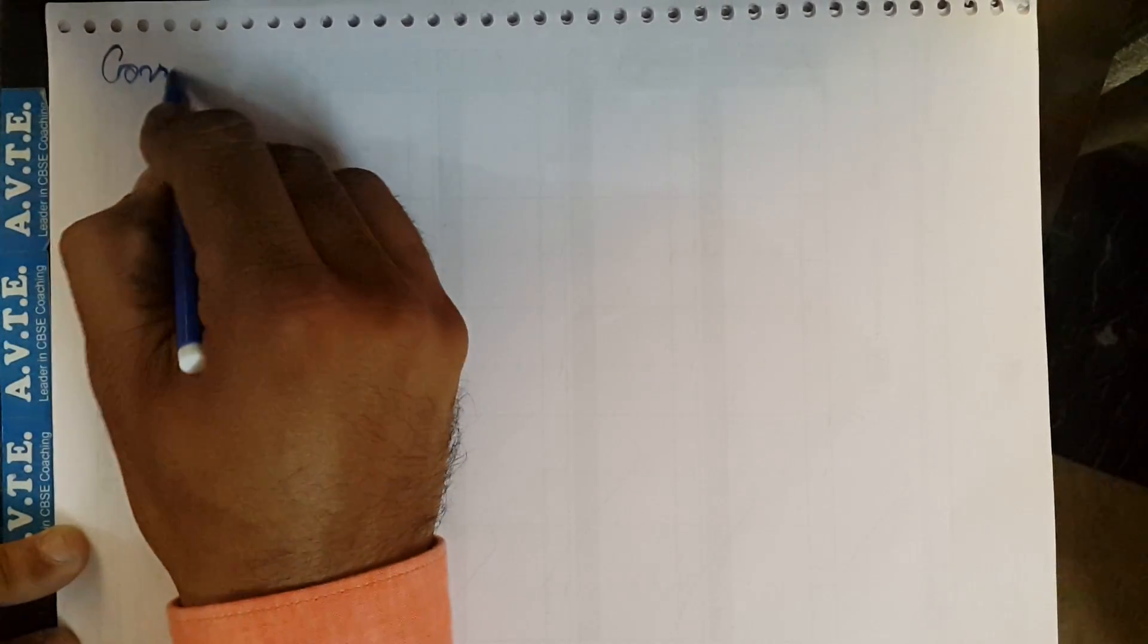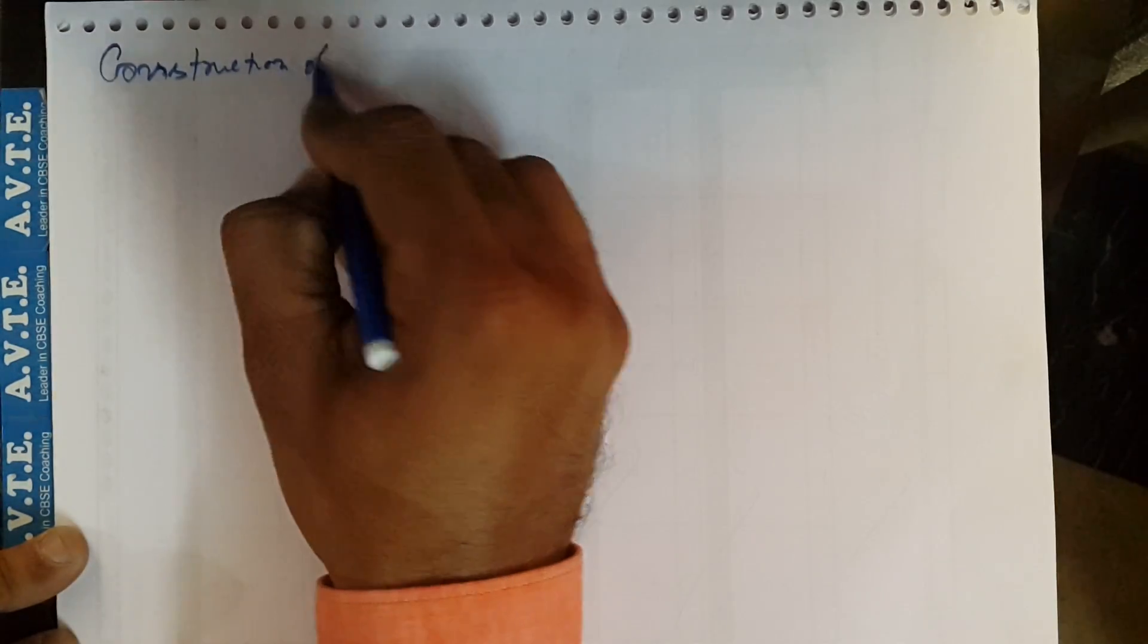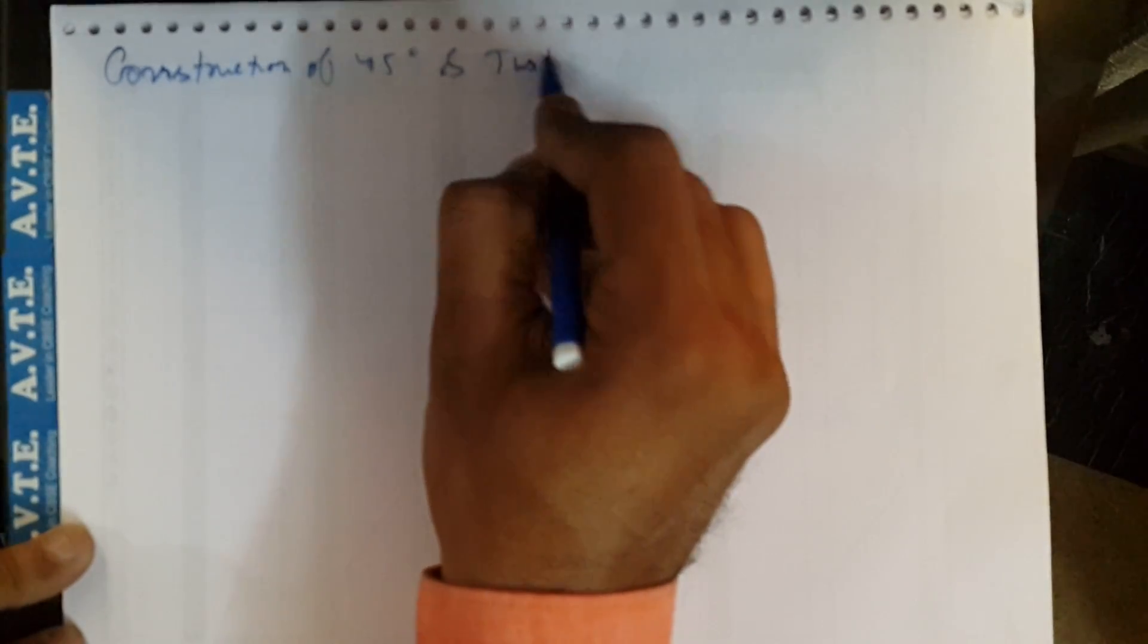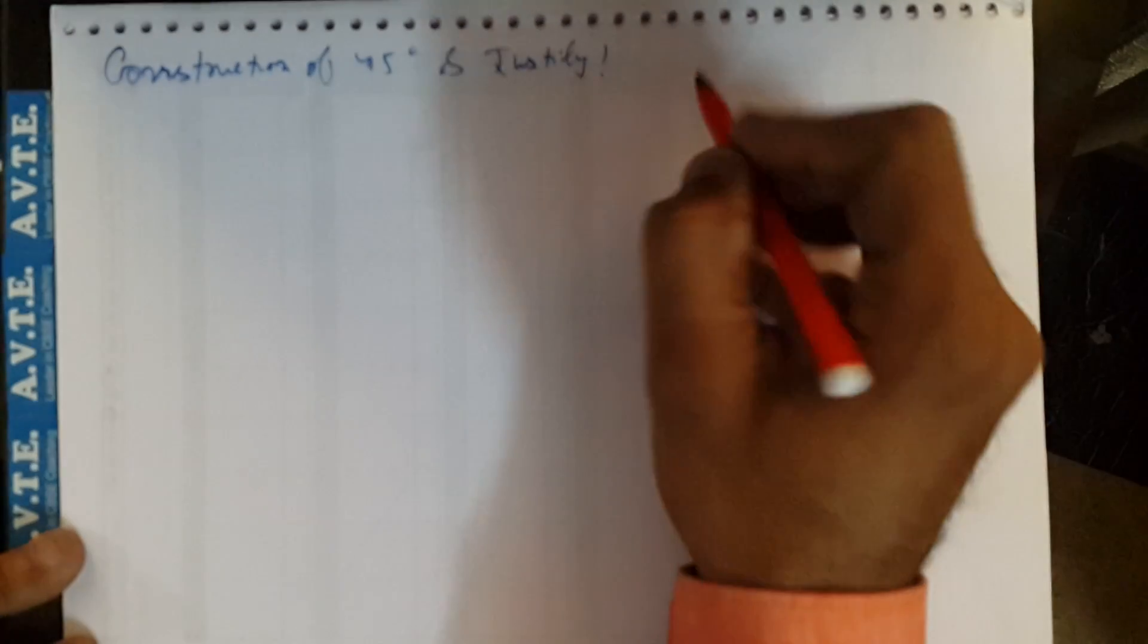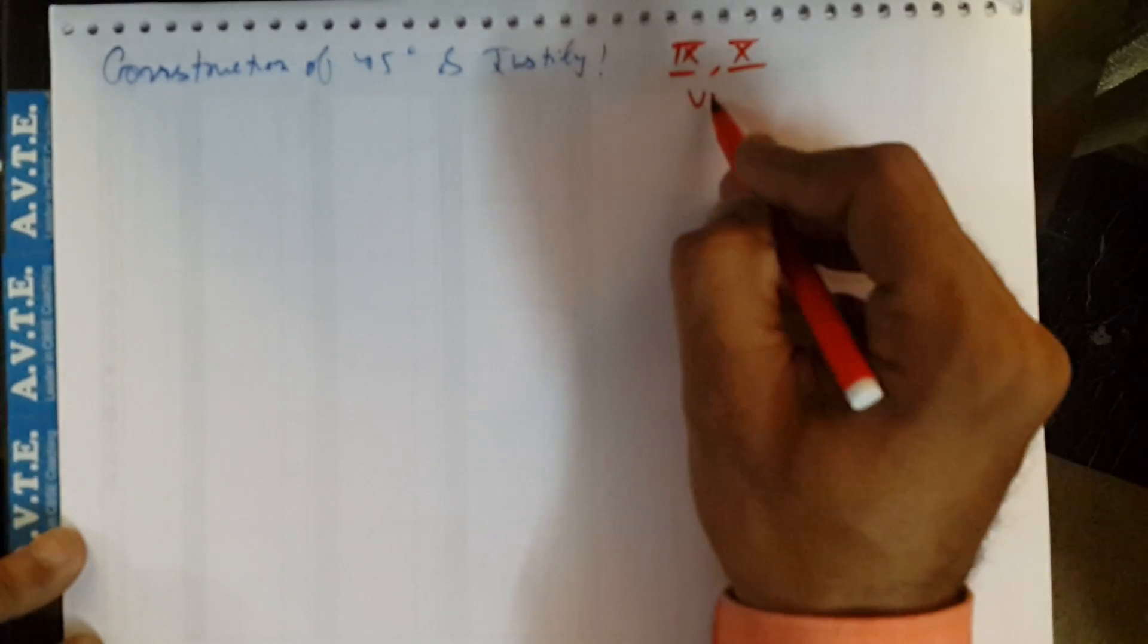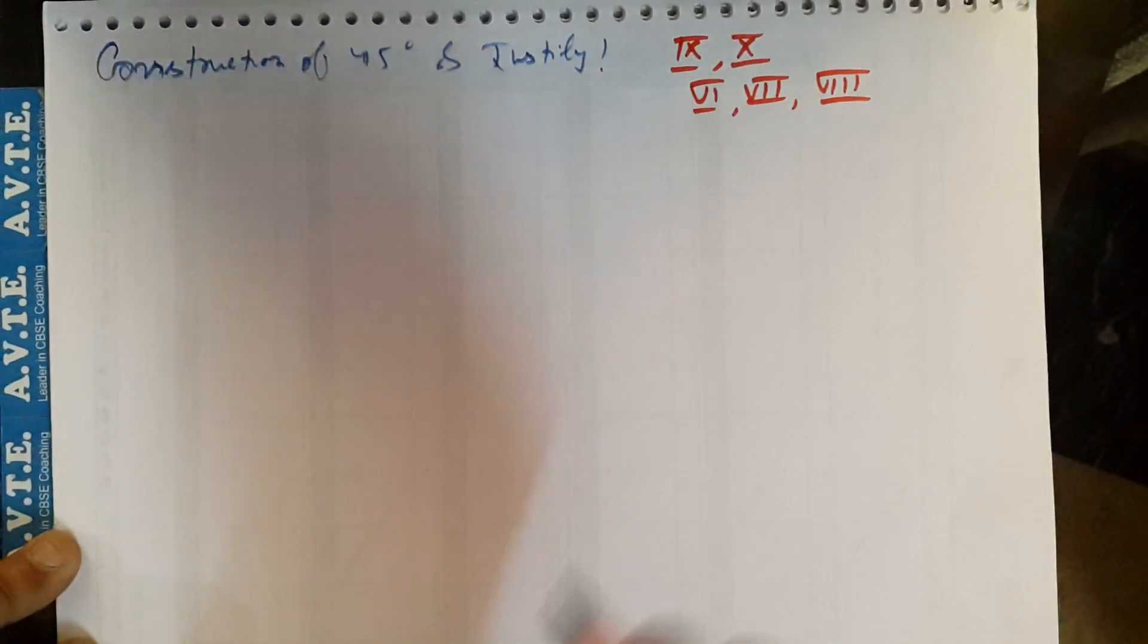Friends, today we are doing a construction of 45 degrees and we'll justify it. This is important for class 9th, chapter name is construction, and class 6th to 8th the chapter name is practical geometry.